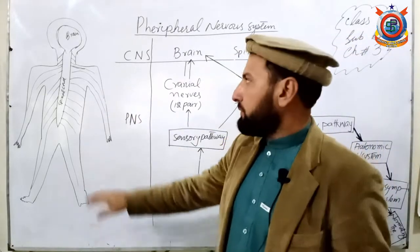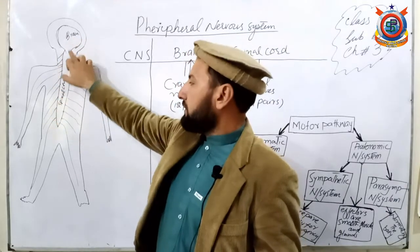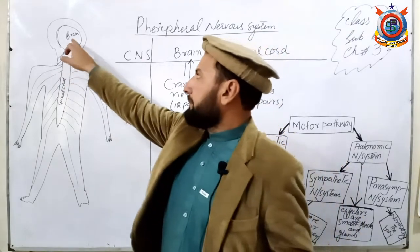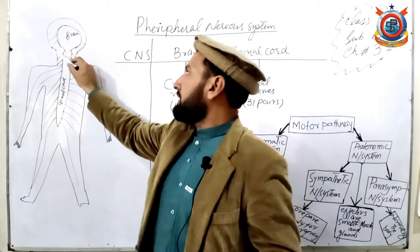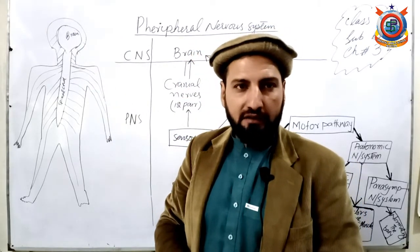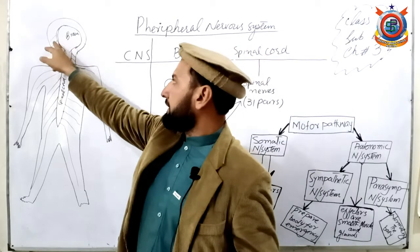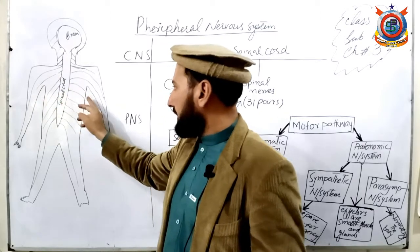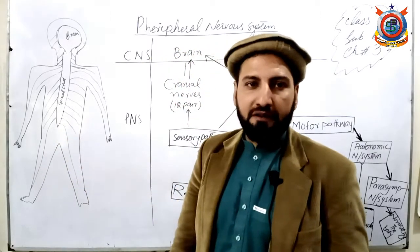آپ اس sketch کو دیکھ لیں — آپ کا brain موجود ہے آپ کے skull کے اندر اور spinal cord موجود ہے آپ کے backbone کے اندر۔ تو brain اور spinal cord آپ کے body کا بناتا ہے Central Nervous System۔ Brain اور spinal cord سے nerves نکلتے ہیں — brain سے بھی اور spinal cord سے بھی۔ Brain اور spinal cord سے نکلنے والے nerves آپ کے body کے اندر بناتے ہیں Peripheral Nervous System۔ یہاں پہ آپ دیکھ لیں — یہ lines جو body کے sides پہ جا رہے ہیں، peripheries کی طرف جا رہے ہیں، یہ بناتے ہیں آپ کا Peripheral Nervous System۔